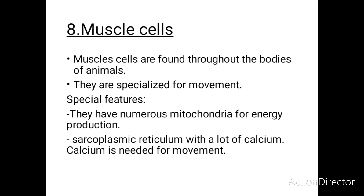Muscle cells are found throughout the bodies of animals and their main function is to produce movement. The special features enabling muscle cells to produce movement are numerous mitochondria for energy production and organelles known as the sarcoplasmic reticulum, which contain a lot of calcium — and calcium is needed in order to produce movement.